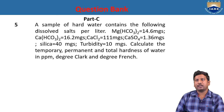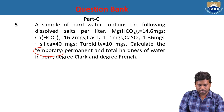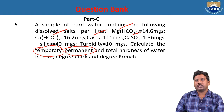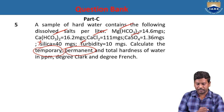Problem 5: A sample of hard water contains: magnesium bicarbonate 14.6 mg, calcium bicarbonate 16.2 mg, calcium chloride 111 mg, calcium sulfate 1.36 mg, silica 40 mg, turbidity 10 mg. Calculate temporary, permanent, and total hardness in ppm, degree Clark, and degree French. Temporary hardness is caused by magnesium bicarbonate and calcium bicarbonate; permanent hardness by calcium chloride and calcium sulfate. Silica and turbidity do not contribute to hardness.